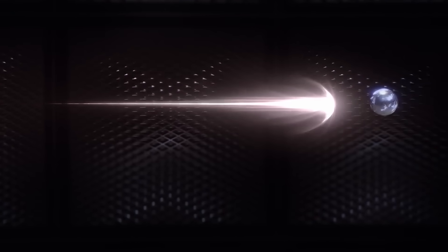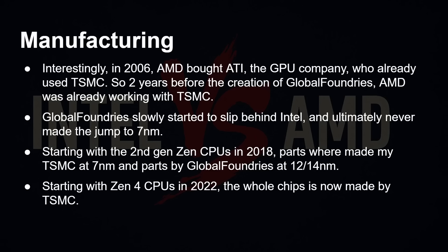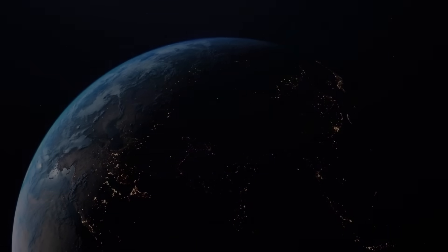GlobalFoundries slowly started to slip behind Intel and ultimately never made the leap to 7nm, so AMD and GlobalFoundries had to renegotiate their wafer supply deal. Starting with AMD's second-generation Zen CPU in 2018, parts were made on TSMC's 7nm process, giving AMD an advantage, while other parts were still made at 12–14nm in GlobalFoundries facilities. Starting with Zen 4 in 2022, everything moved to TSMC because GlobalFoundries stayed at 12 and 14nm.